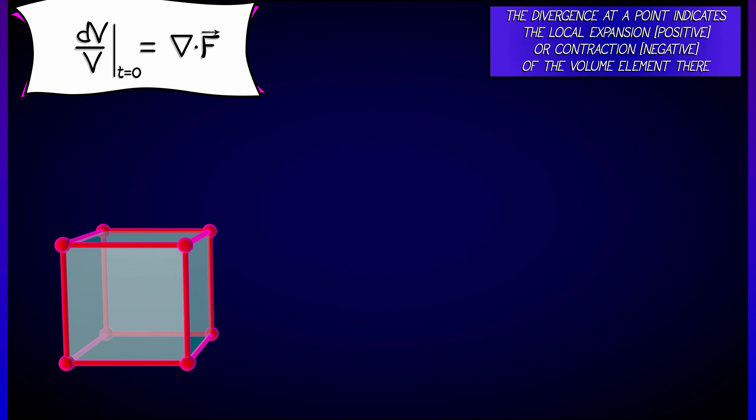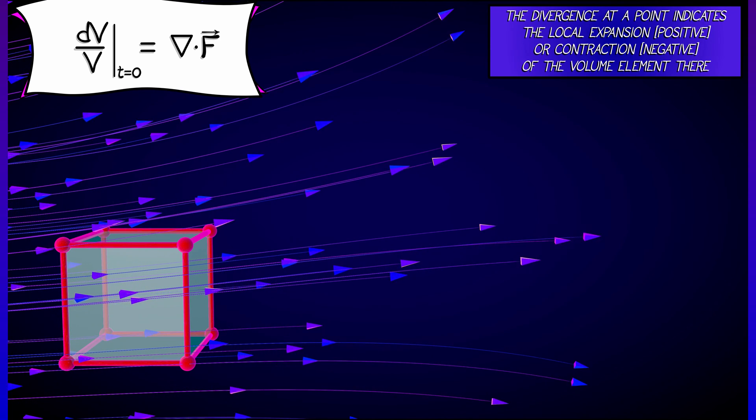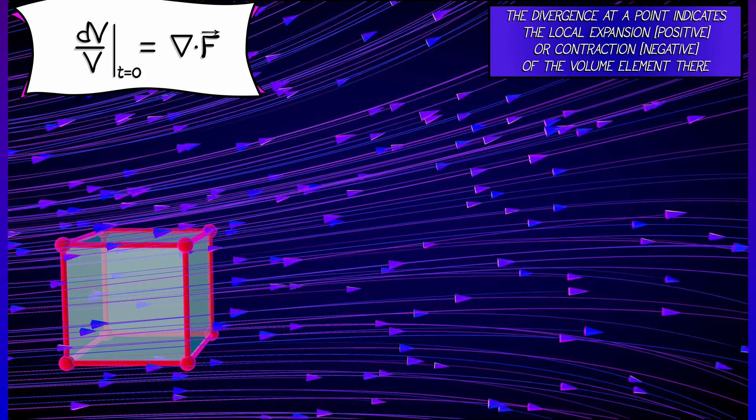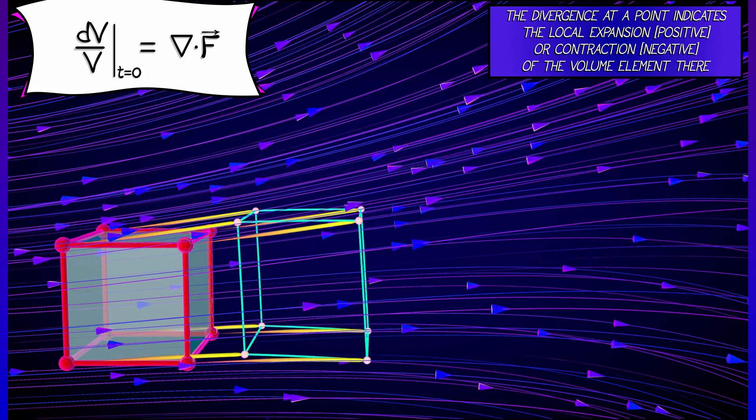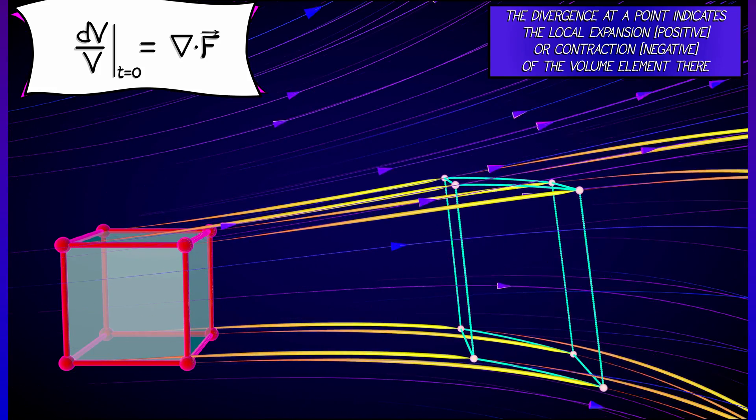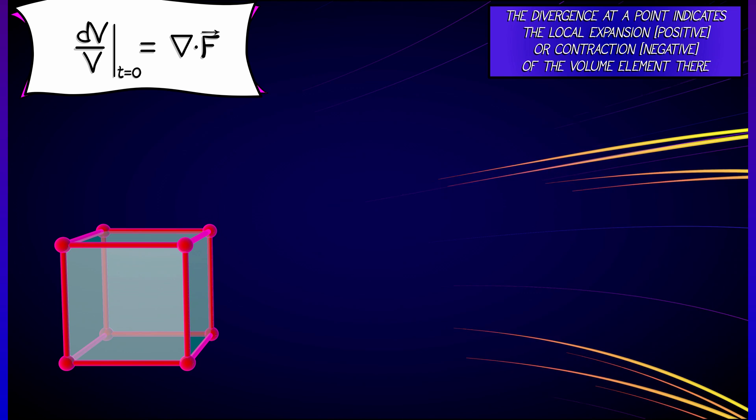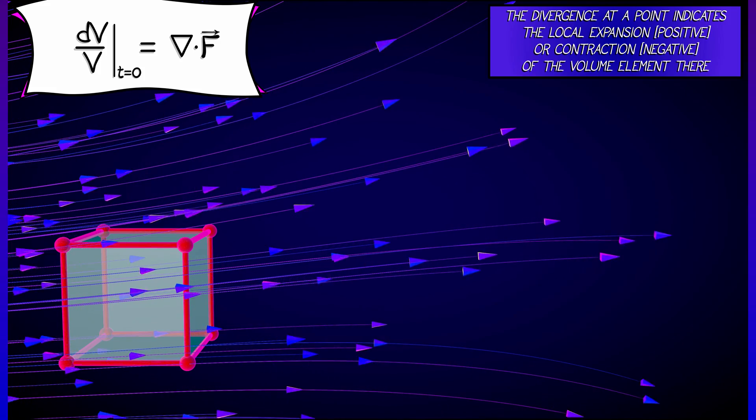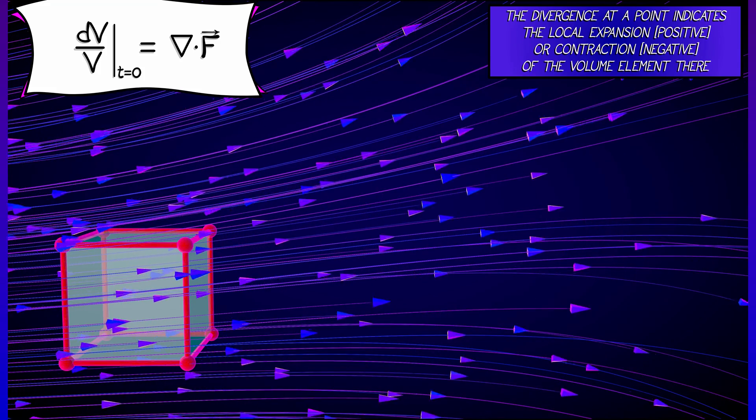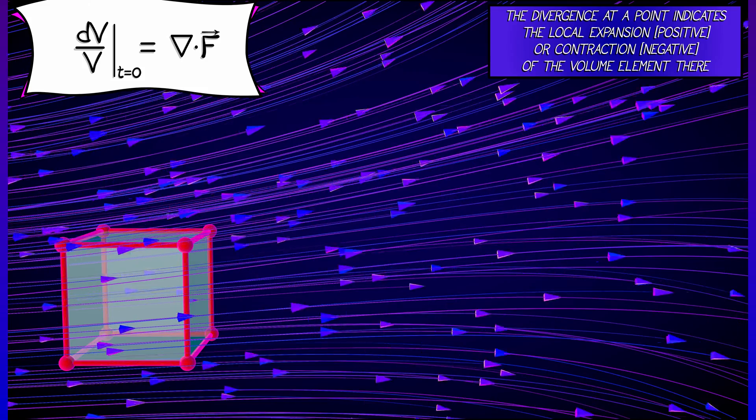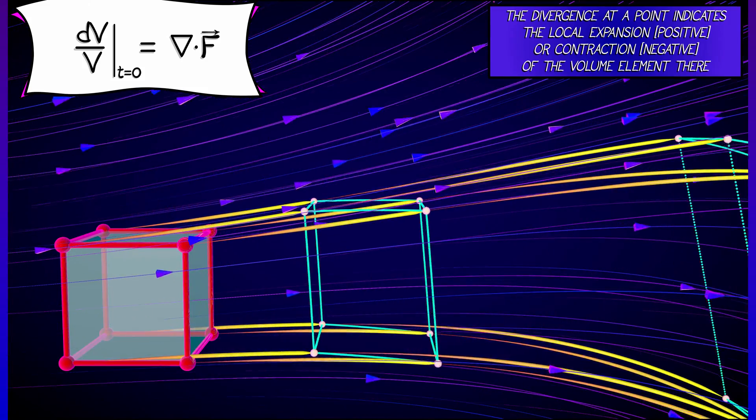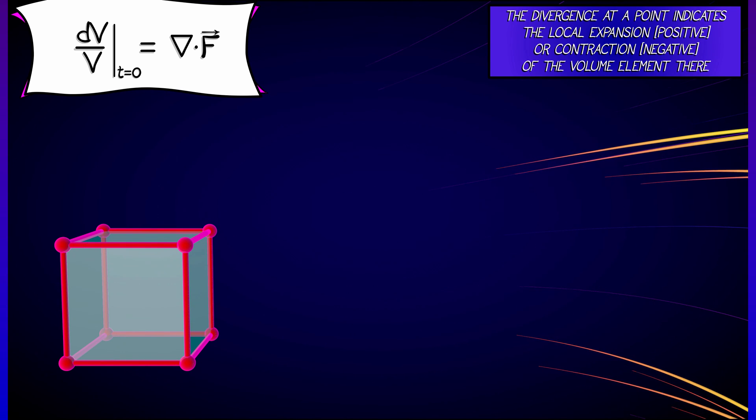If you've got this volume element inside a vector field, think of that vector field as flowing and pushing the volume element along. What happens to the volume of that volume element as it gets evolved by the vector field? If you measure the rate of change of that volume and get something positive so that it's expanding, that corresponds to positive divergence. Shrinking corresponds to negative divergence.